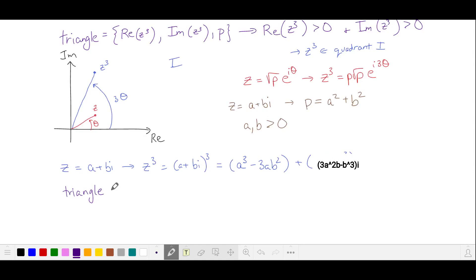So our triangle has side lengths a cubed minus 3ab squared, 3a squared b minus b cubed, and p, which is a prime number and positive.